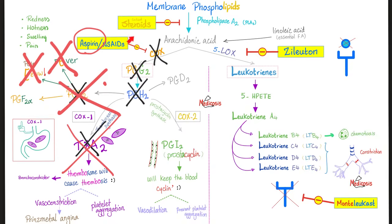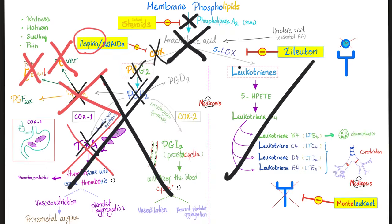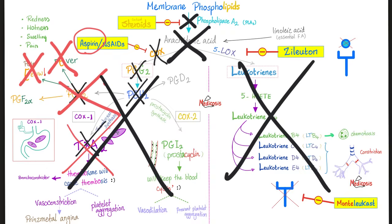Why are corticosteroids considered to be potent anti-inflammatory medications? Because they inhibit the source — they inhibit phospholipase A2. Without phospholipase A2, there is no arachidonic acid, there are no prostaglandins, and there are no leukotrienes either. So there is no pain, no fever, no inflammation, no swelling, no thrombosis, and no neutrophilic chemotaxis.